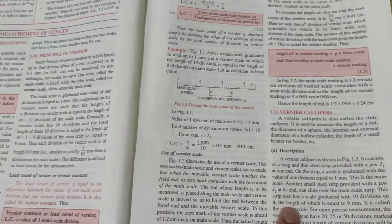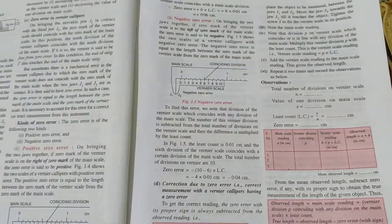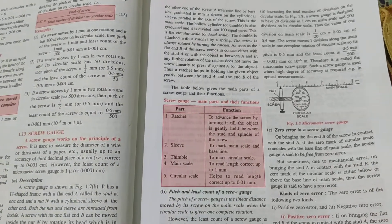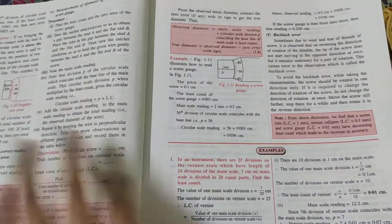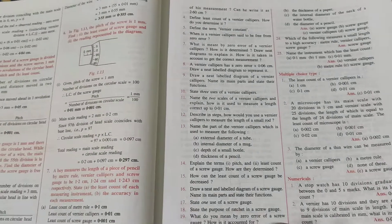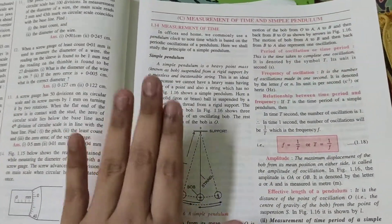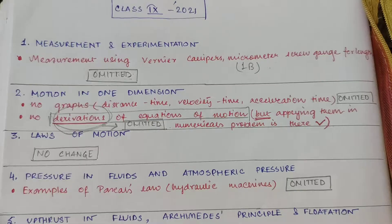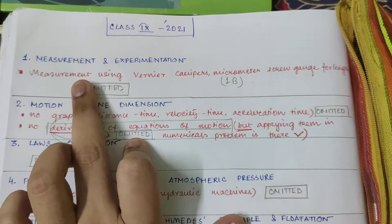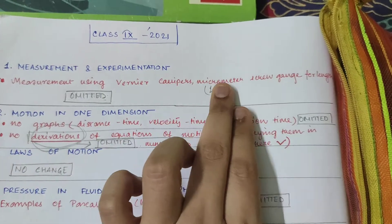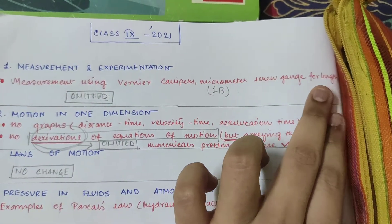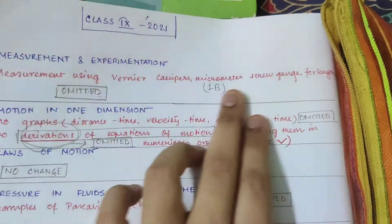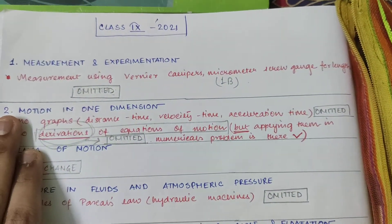Screw gauge, all these things you don't have. So basically 1B you are not having in your syllabus. Again you have 1C. 1C you have - measurement of time and simple pendulum you have. Okay, understood? So they have omitted this measurement using vernier calipers and micrometer screw gauge for length, and we haven't done that portion. We have anyways done 1A and 1C. So that's good then.